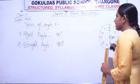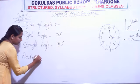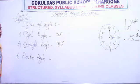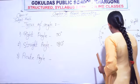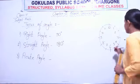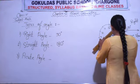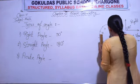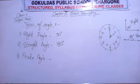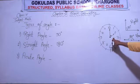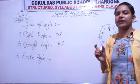The next type is the acute angle. On a clock, if the hour hand is at 2 and the minute hand is at 12, the space between the two hands shows an angle which is less than 90 degrees. So any angle which comes between 0 degrees and 90 degrees is known as an acute angle.